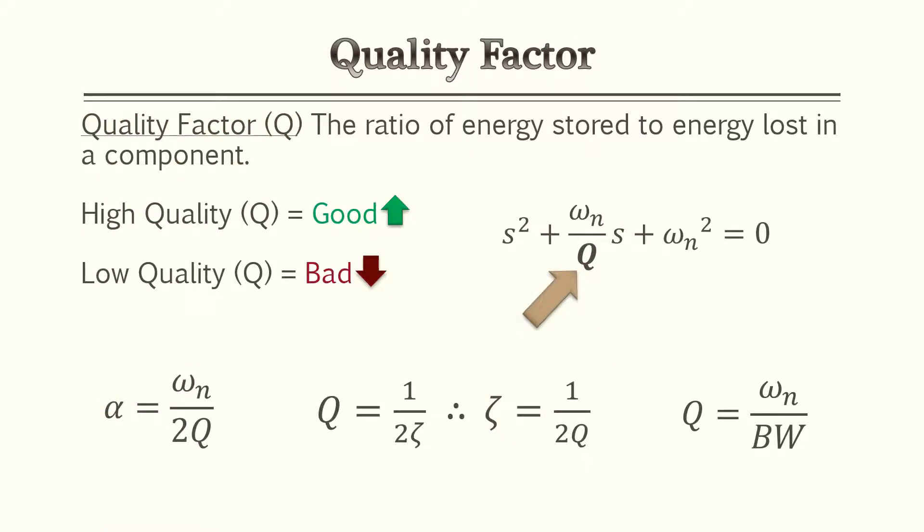A very common entity seen with second order models is the quality factor. The quality factor is the ratio of energy stored to energy lost in a component. A high quality factor is desirable; a low quality factor is not. In your second order model equation, it appears as natural frequency over quality factor. I also have equations at the bottom showing how to calculate it using zeta, bandwidth, or alpha, and we'll go over that in the examples next.